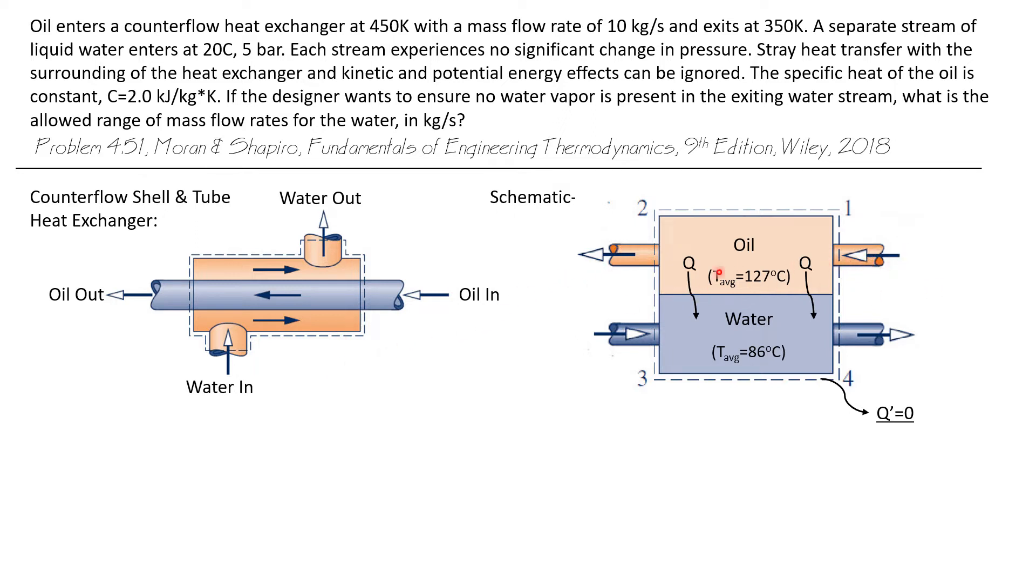Essentially we have two passages. We have oil coming in at state one and flowing through the heat exchanger exiting at state two. Water flows in going the opposite direction at state three, exits at state four. And we're going to take the system as both fluids. So all the oil molecules and all the water molecules are our system.